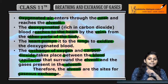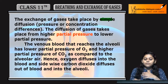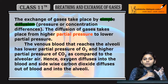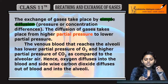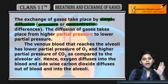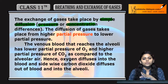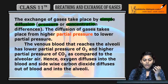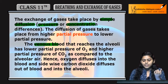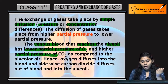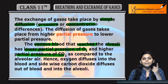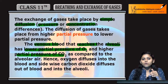This gaseous exchange happens by simple diffusion — from a region of higher concentration to lower concentration. It depends on both concentration and partial pressure: from higher partial pressure to lower partial pressure. The venous blood present in the veins that reaches the alveoli has low partial pressure of oxygen and high partial pressure of carbon dioxide, since it is deoxygenated blood.